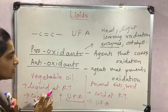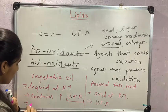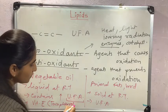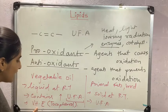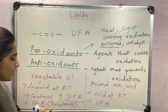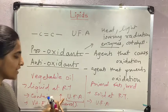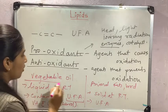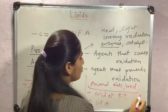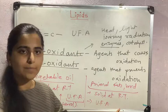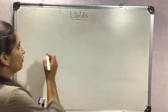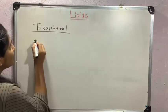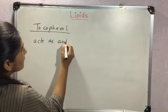Vegetable oil contains a natural antioxidant which is Vitamin E, also called tocopherol. This natural antioxidant prevents oxidation even though the oil is more unsaturated. Animal fats do not contain any natural antioxidant, therefore they are more susceptible to oxidation. Tocopherol acts as an antioxidant.